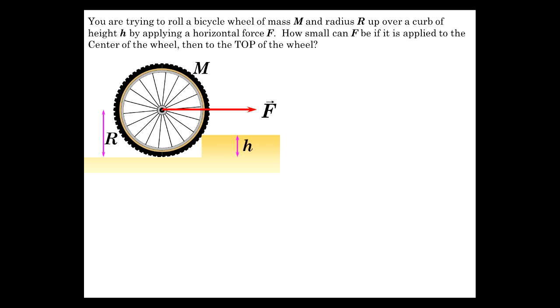Because what we're trying to find is the minimum force F needed. How small can F be so that this whole bicycle wheel pops up over this curb? And it's only going to be a horizontal force.